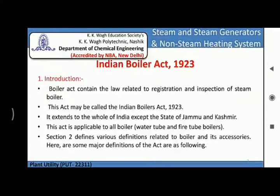The Indian Boiler Act came in 1923. This act contains the law related to registration and inspection of steam boilers. This act may be called the Indian Boiler Act 1923. It extends to the whole of India except the state of Jammu and Kashmir. This act is applicable to all boilers, for example water tube boilers, fire tube boilers, and different types of water tube and fire tube boilers.